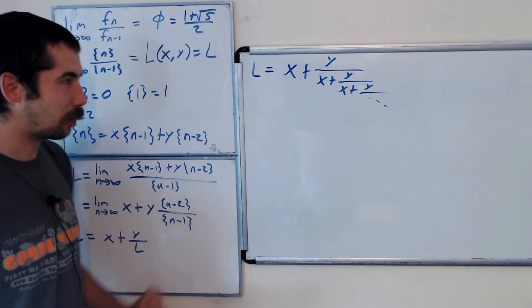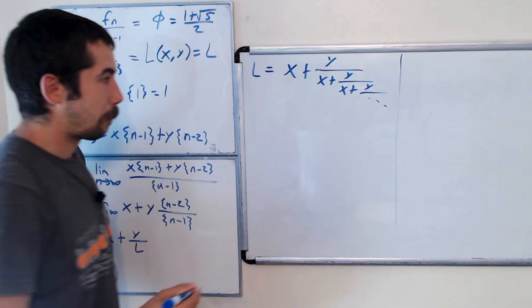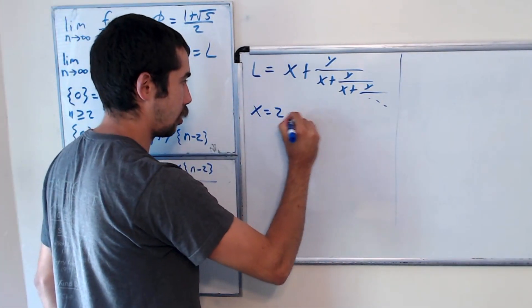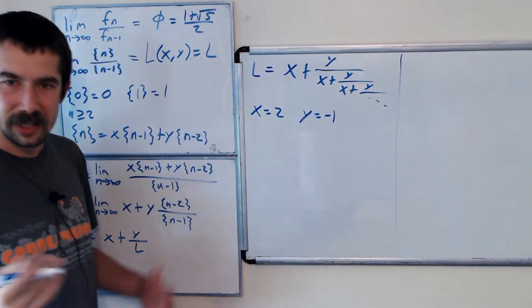And you've all seen that before. Here's another one for you before we get to some more interesting things. If we plug in x equals 2 and y equals negative 1, what sequence are we going to get?